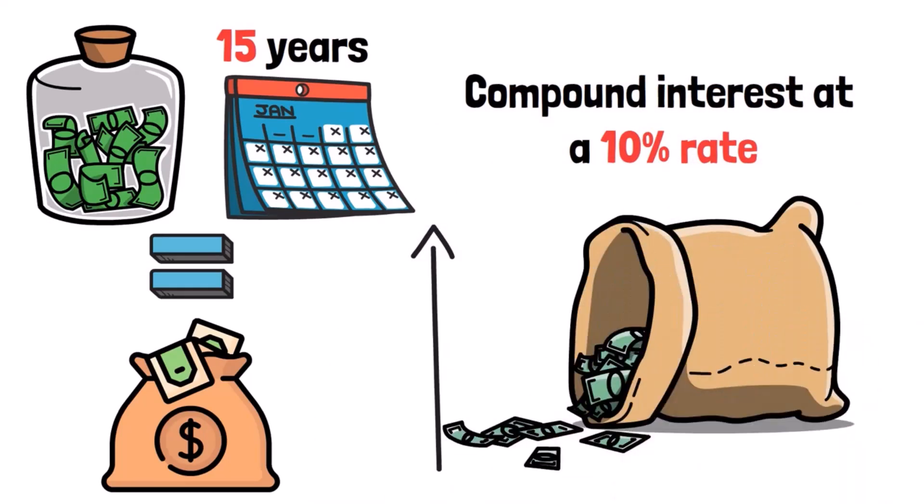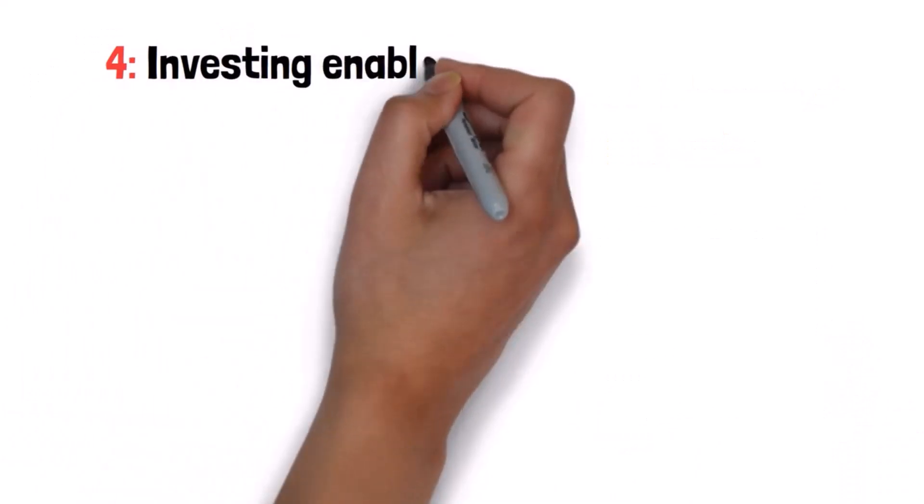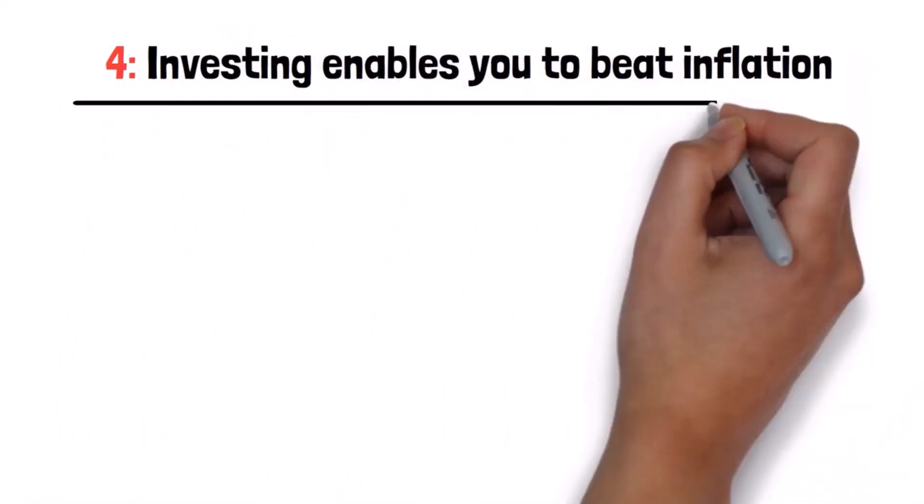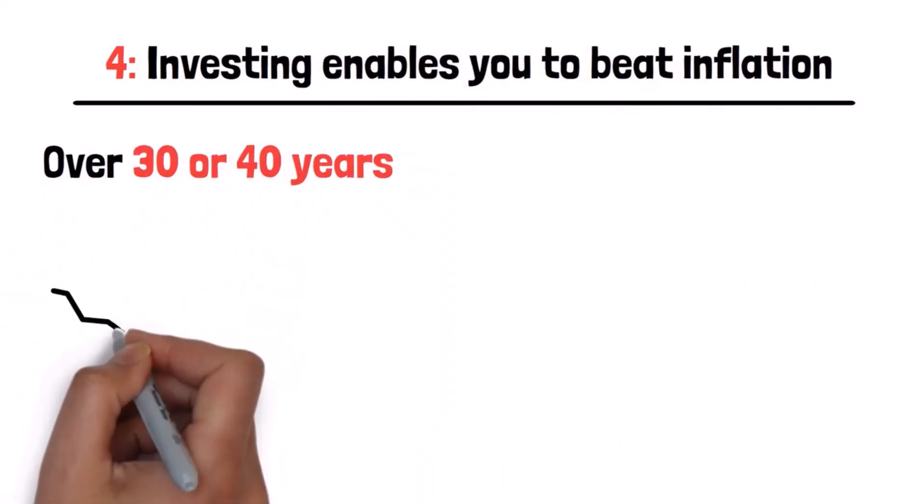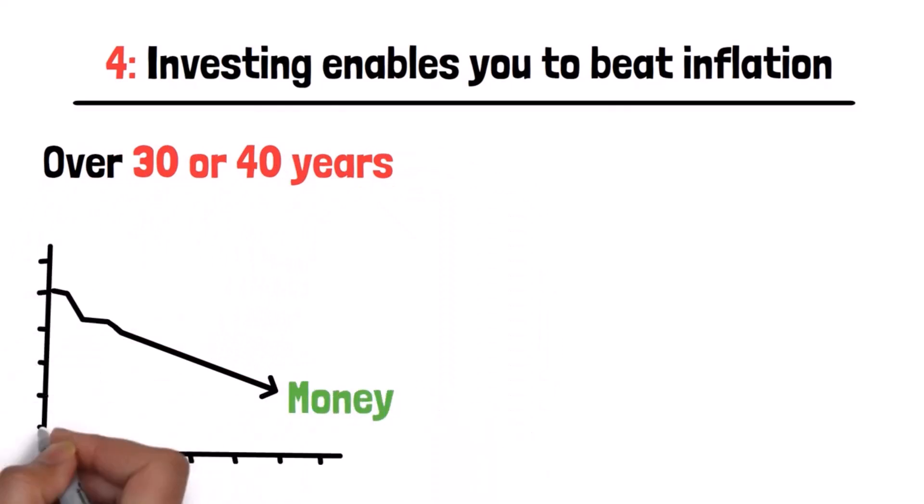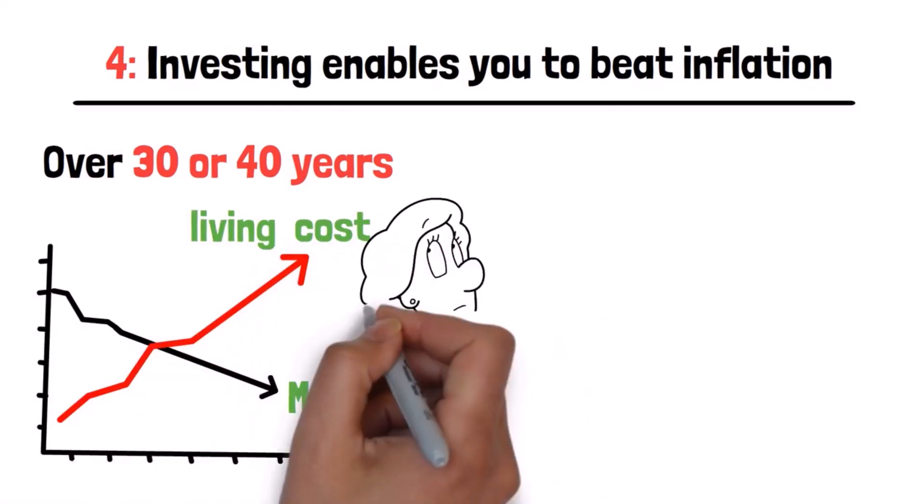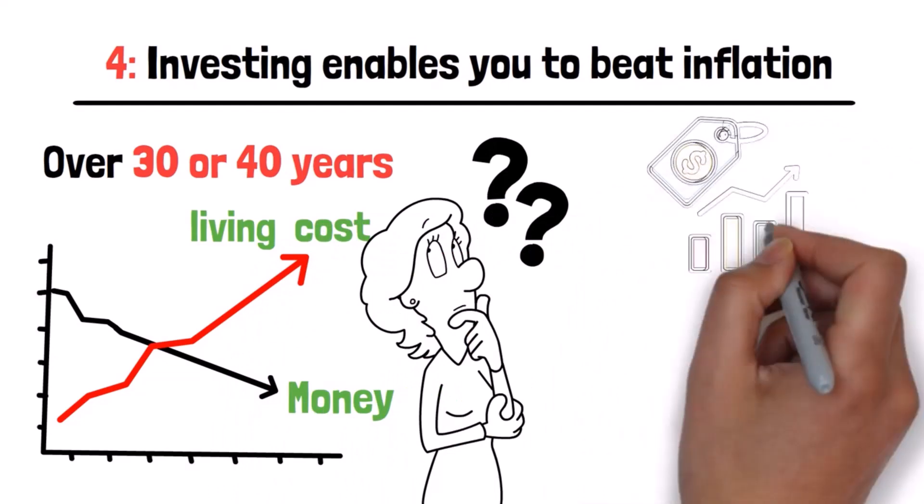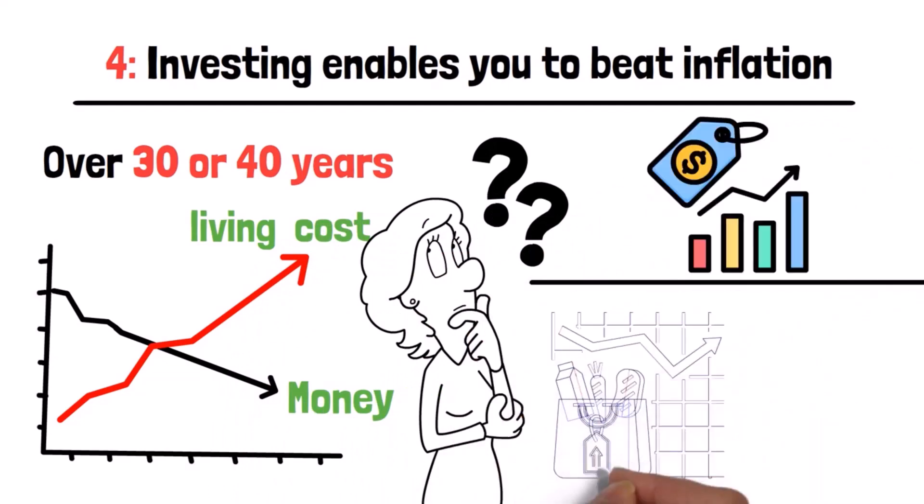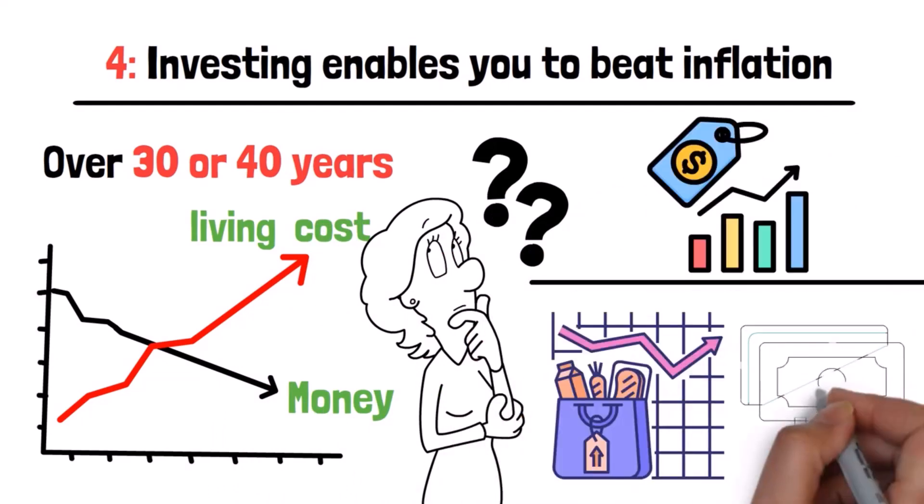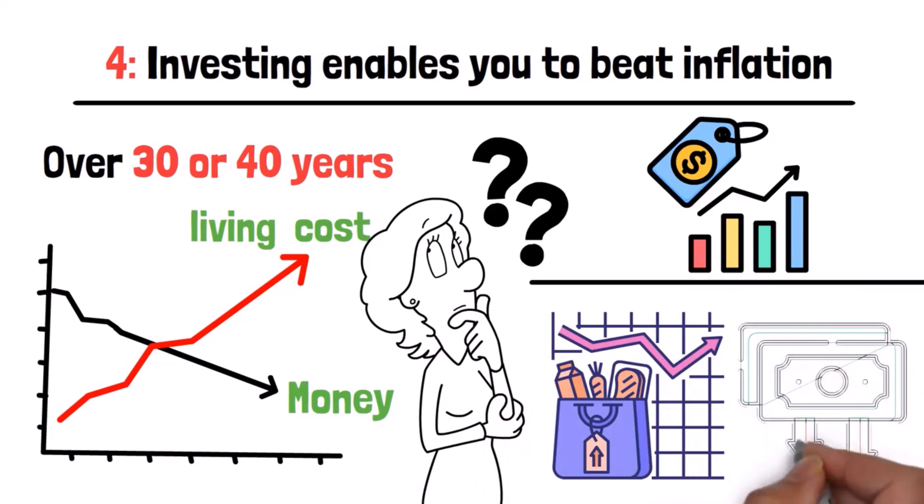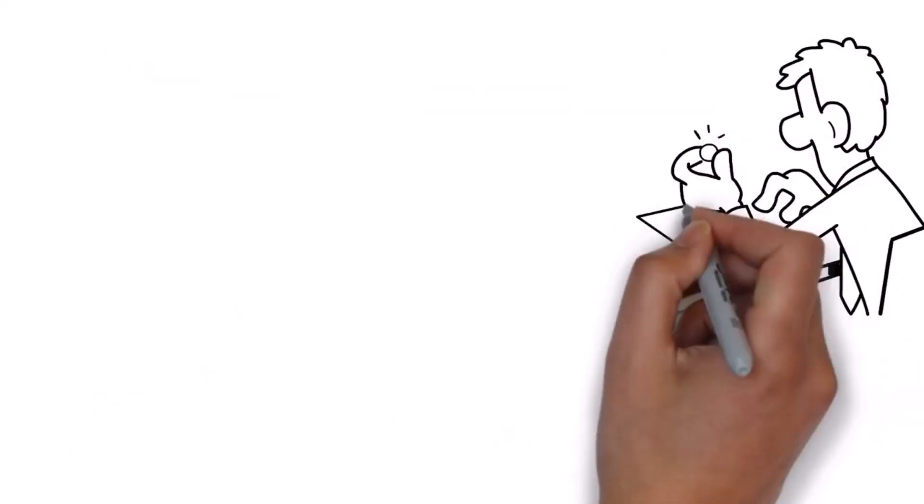Four, investing enables you to beat inflation. Over 30 or 40 years, your money becomes worth much less while the cost of living rises. Why? Well, it's all due to inflation. Inflation is the general rise in product prices over time, and as they do, the purchasing power of your money decreases.